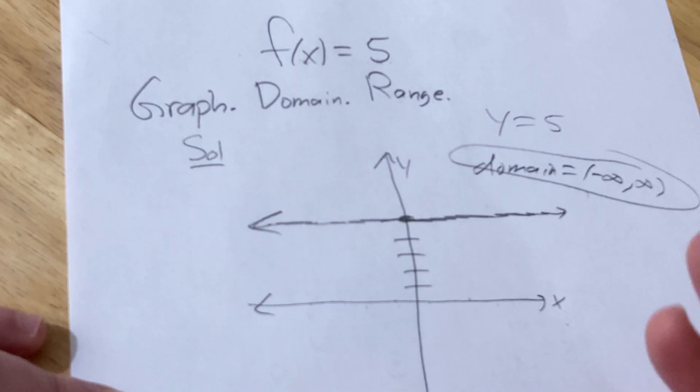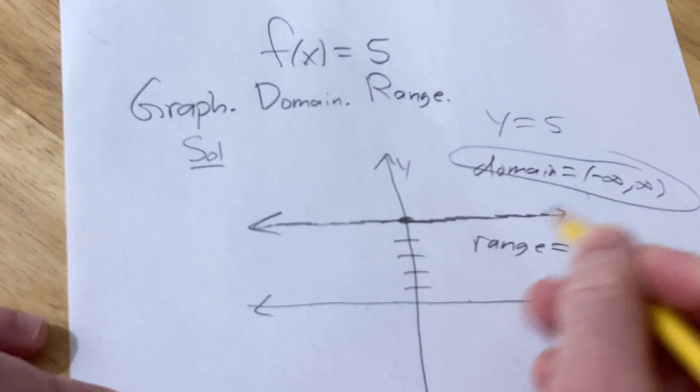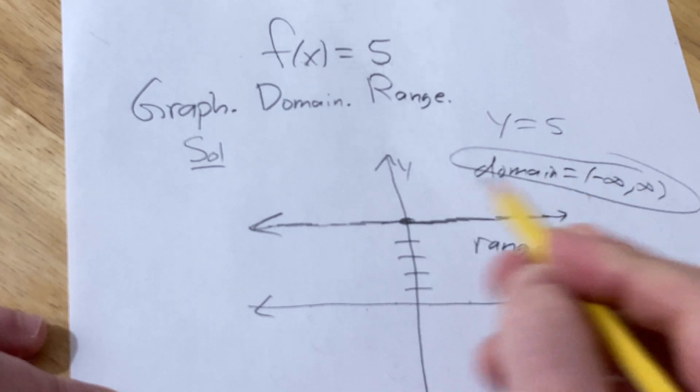Range is all the possible y-values. So the range in this case is a single number. It's the number 5 because that's the only y-value.